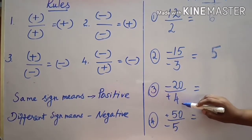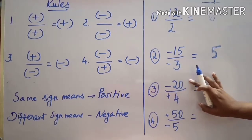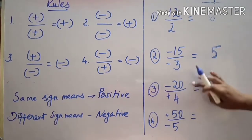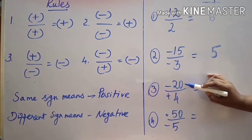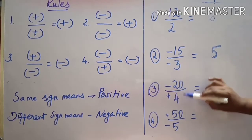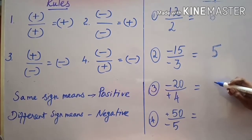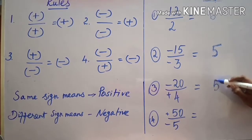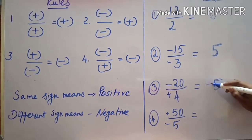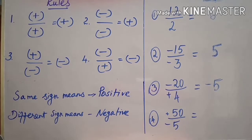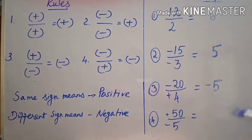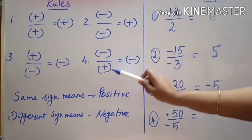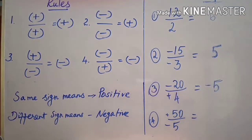Third sum: minus twenty divided by four — a negative number divided by a positive number. Signs are different. First divide: twenty divided by four is five. Different sign means the answer is negative: minus five. One negative divided by positive gives a negative answer.